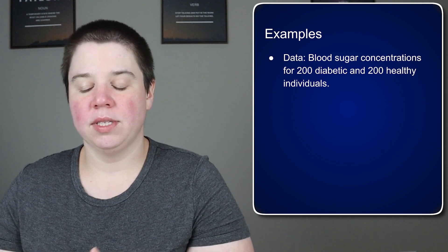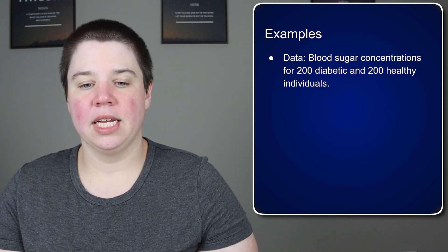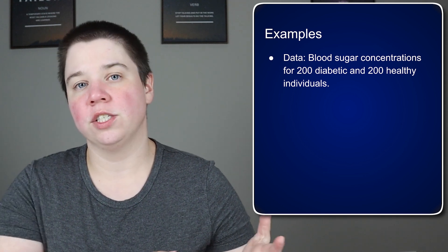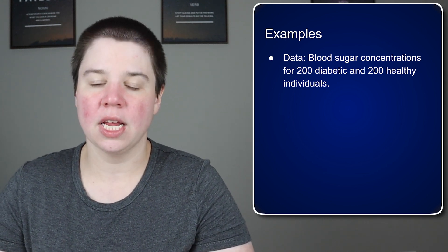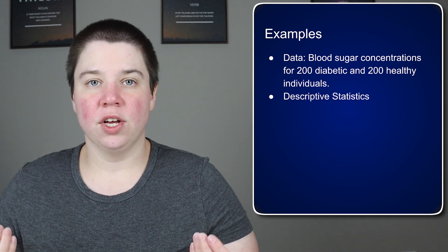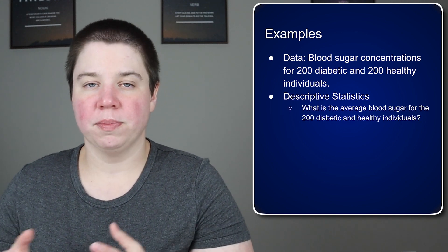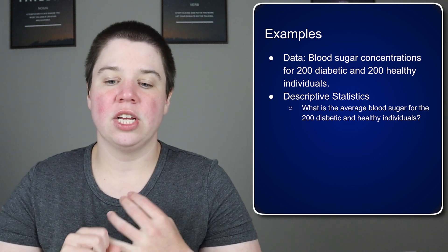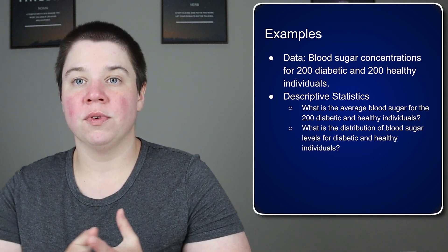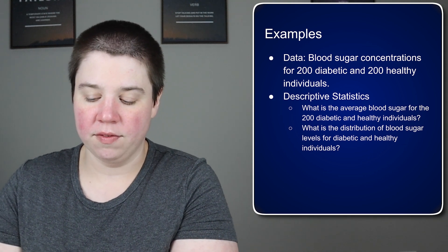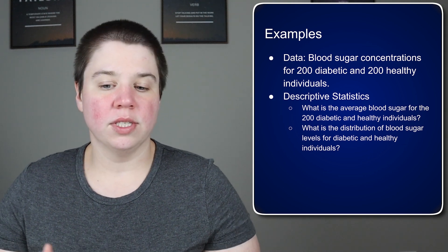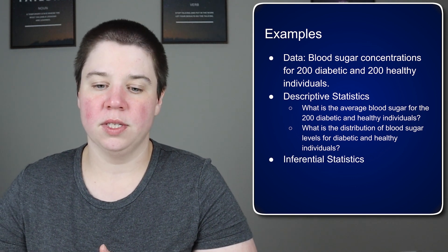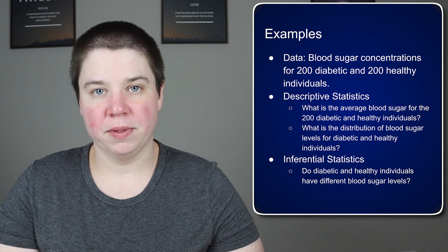For example, if we had blood sugar concentration data for 200 diabetic and 200 healthy individuals, we could analyze it both descriptively and inferentially. For descriptive statistics, we can answer: what is the average blood sugar for the 200 diabetic and 200 healthy individuals? We could also look at the distribution of blood sugar levels for each group. Those both fall under descriptive statistics.